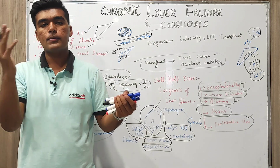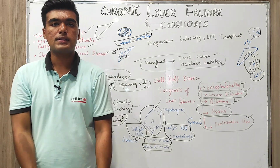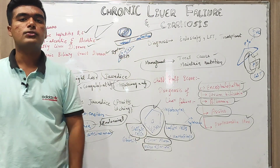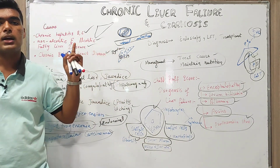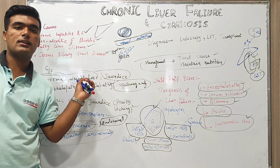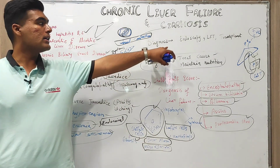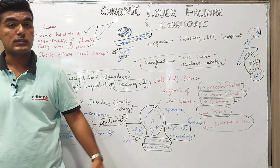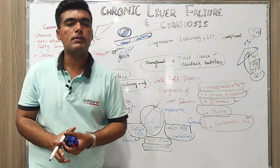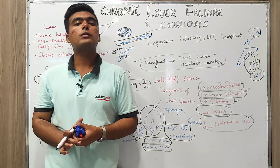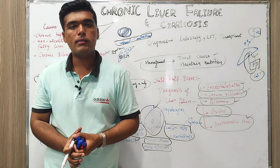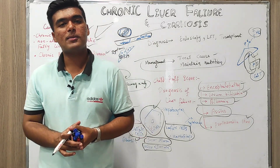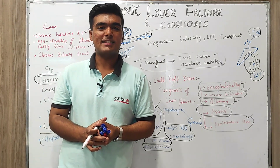In quick overview, we discussed the basics, definition, how fibrosis and nodule phenomena take place, what the causes are, how they are clinically presented, and what the diagnosis, management, treatment, and prognosis are. That is all from chronic liver failure and cirrhosis — hope you all understood. In case of any query you can directly ask me. Do not forget Medical Lectures by Shujat. Thank you so much, guys.